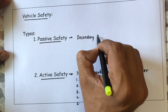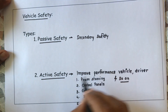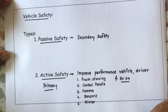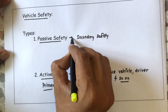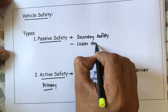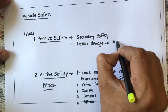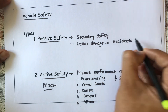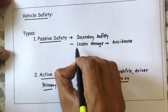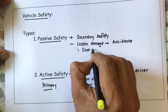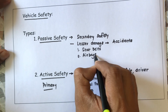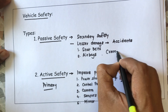Passive safety is our secondary safety — secondary to active safety — and what we can call primary safety. The purpose of providing passive safety is in order to have lesser damage as a result of an accident. If we meet with an accident and we want to have lesser damage, we need to use passive safety. Examples of passive safety include seat belts and airbags.